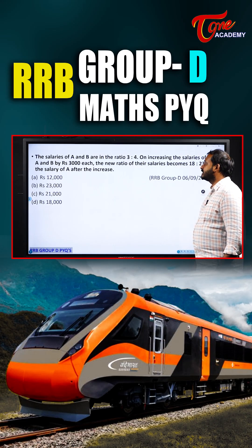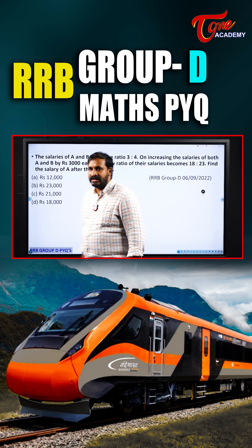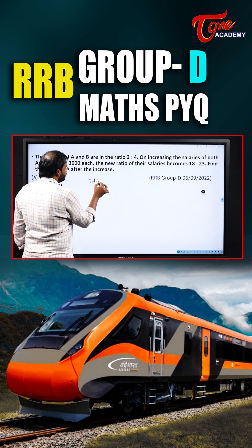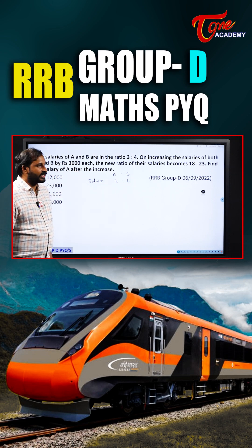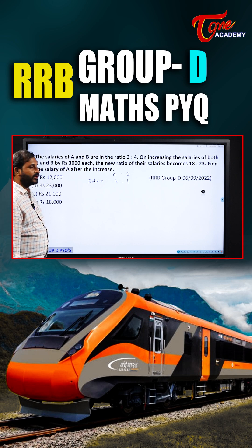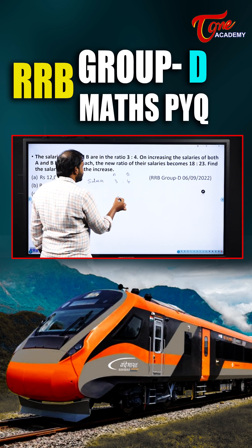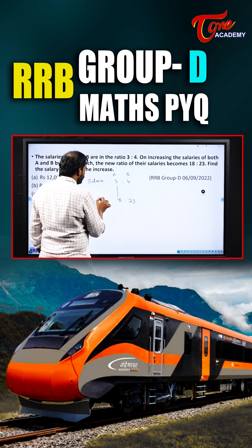The salaries of A and B are in the ratio of 3 is to 4. On increasing the salaries of both A and B by 3000 each, the new ratio becomes 18 is to 23.